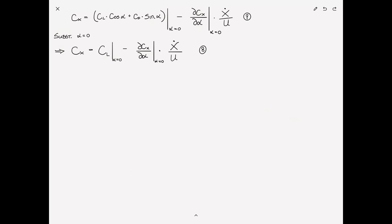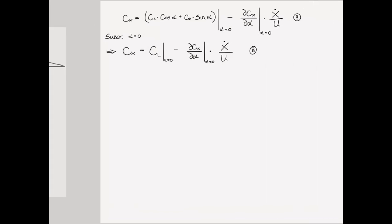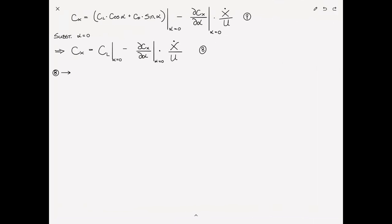So, now we can substitute equation 8 into equation 2, which I remind you is this equation here for the force. And that gives us that f(t) is now equal to f0 minus 1/2 ρuS times dCx/dα at α equals 0 times x dot. It's equation 9, where f0 is equal to 1/2 ρu²S times CL at α equals 0. And I just want to make the point that this is constant. It's just a static force. It's not particularly interesting. We know how to deal with static forces from previous problems. We'll call this equation 9.